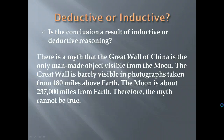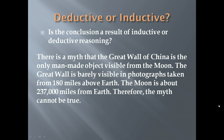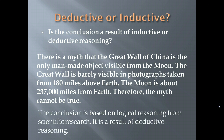Another example: There is a myth that the Great Wall of China is the only man-made object visible from the moon. The Great Wall is barely visible in photographs taken from 180 miles above the Earth, and the moon is about 237,000 miles from Earth. Therefore the myth cannot be true. The conclusion is based on logical reasoning from scientific research — this is the result of deductive reasoning.